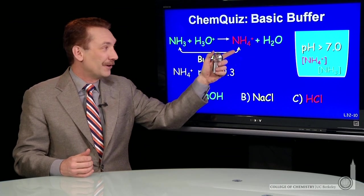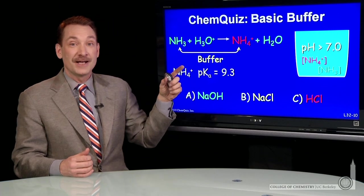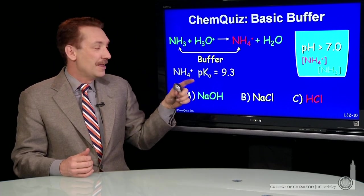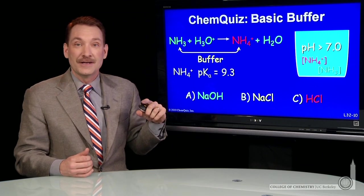So I'll form a buffer of NH4 plus and NH3, the ammonium ion and ammonia. The pH will be around 9.3.